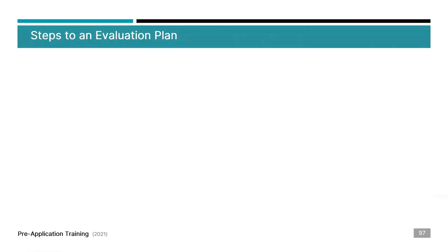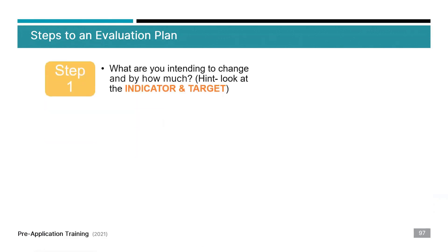Here are some steps to start an evaluation plan. To start, we have the TTIP objective that you drafted under the project framework. The following steps will lead to an Outcome Tracker, the ANA tool for evaluation. Step one is: what are you intending to change and by how much? We already have that information — it is the indicator and the target from our TTIP objective.